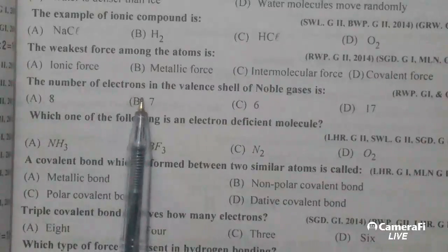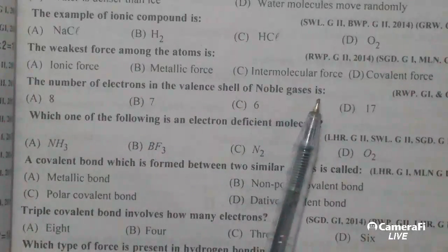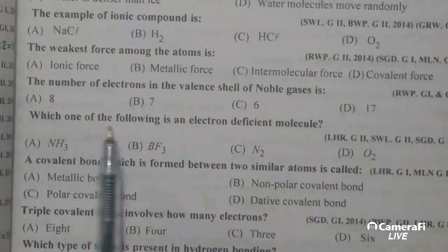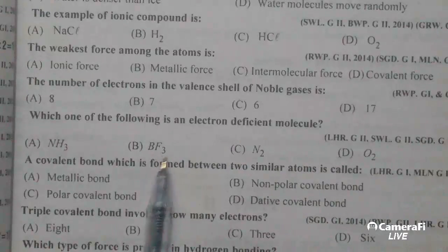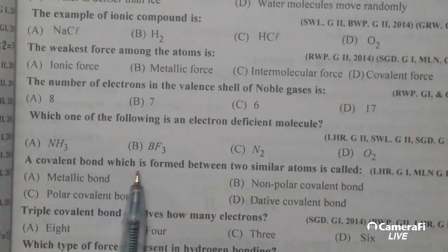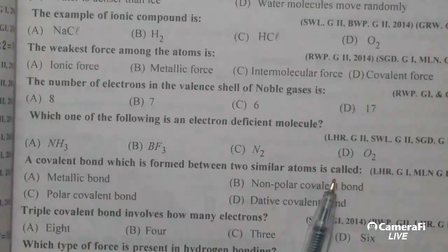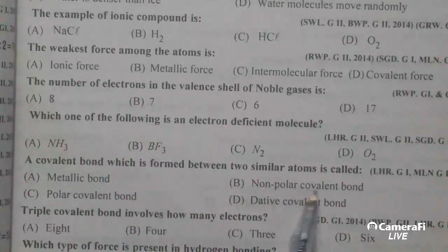The weakest force among the atoms is intermolecular force. The number of electrons in the valence shell of noble gases is 8. Which one of the following is an electron deficient nucleus? BF3. A covalent bond which is formed between two similar atoms is called nonpolar covalent bond.